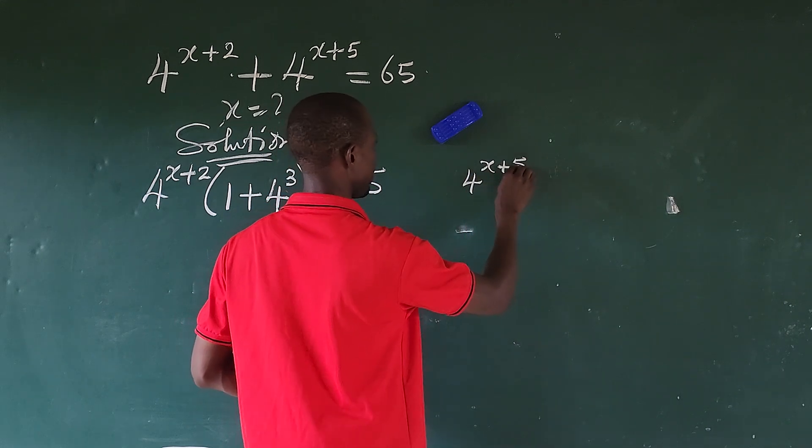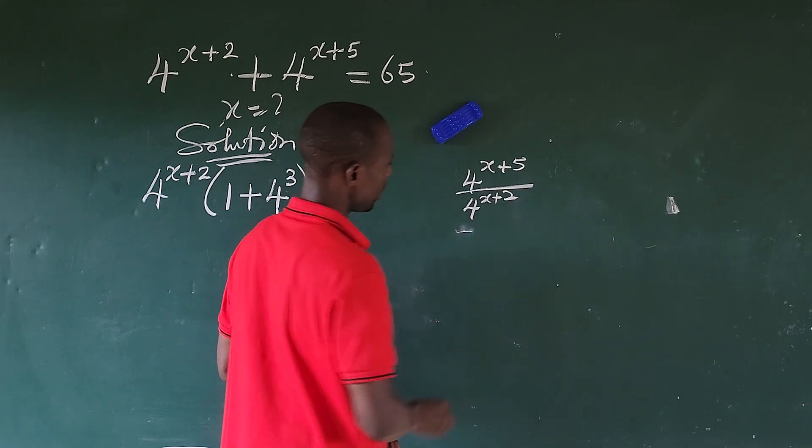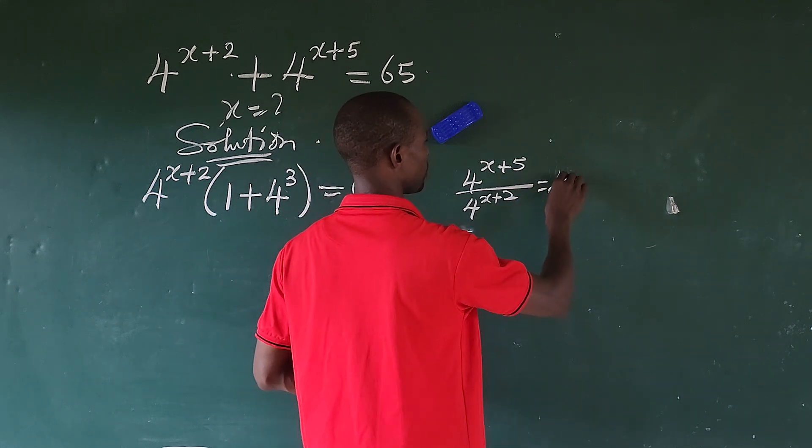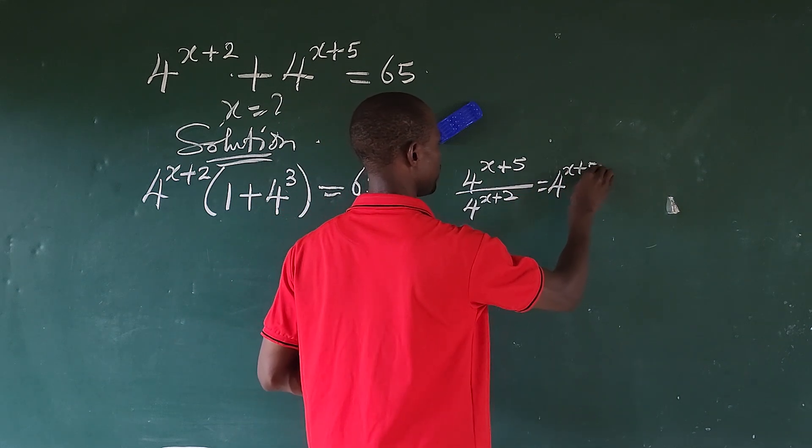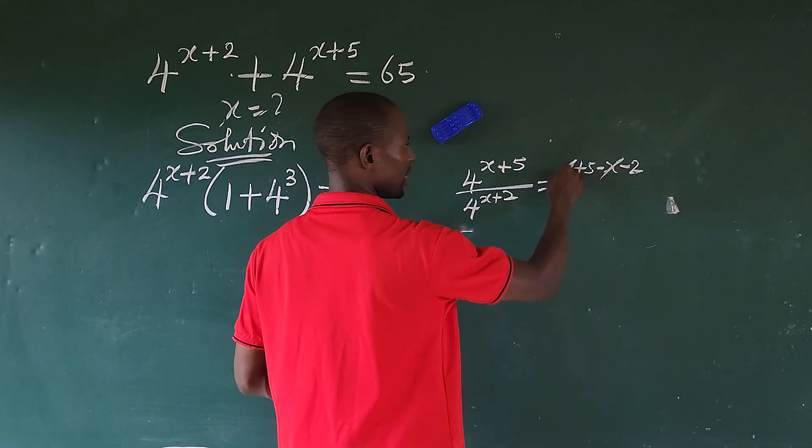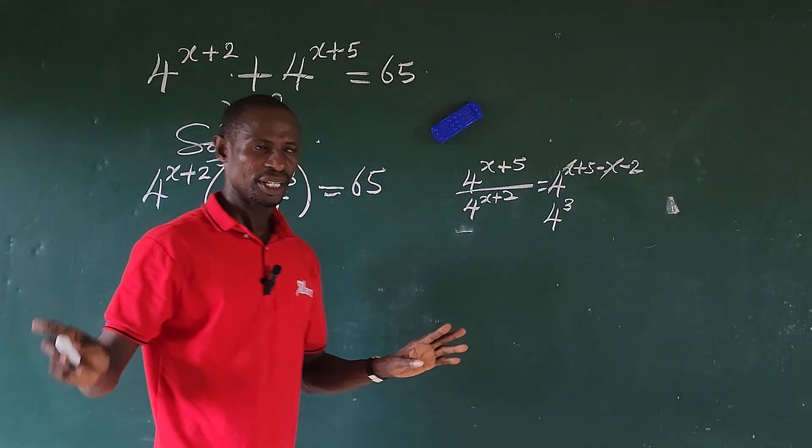Plus 5, all over 4 to the power of x. The bases are the same, so this will give us 4 to the power of x plus 5 minus x minus 2. This leaves us with 4 to the power of 3, since 5 minus 2 is 3. So that's what I did here.